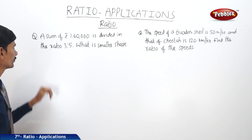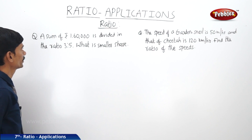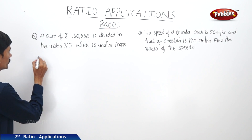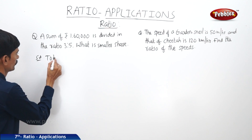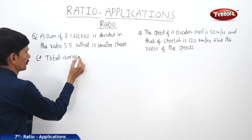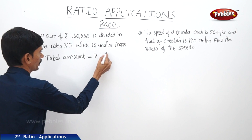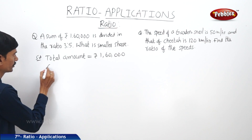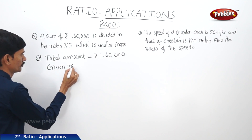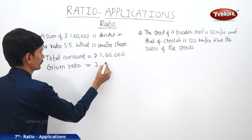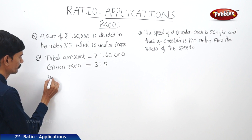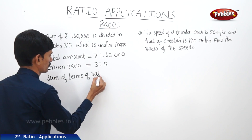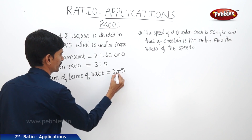Now let us see the next question. A sum of 1,60,000 rupees is divided in the ratio 3 is to 5. So what is the smaller share? The total amount equals to 1,60,000 rupees which is to be divided in the ratio 3 is to 5. The given ratio equals to 3 is to 5, and the sum of terms in the ratio equals to 3 plus 5 equals to 8.